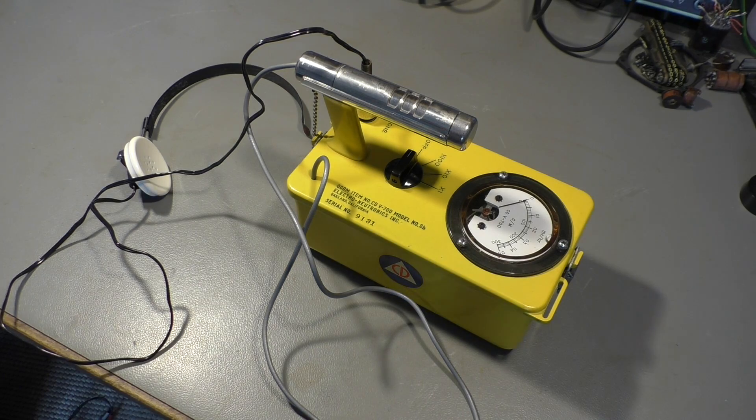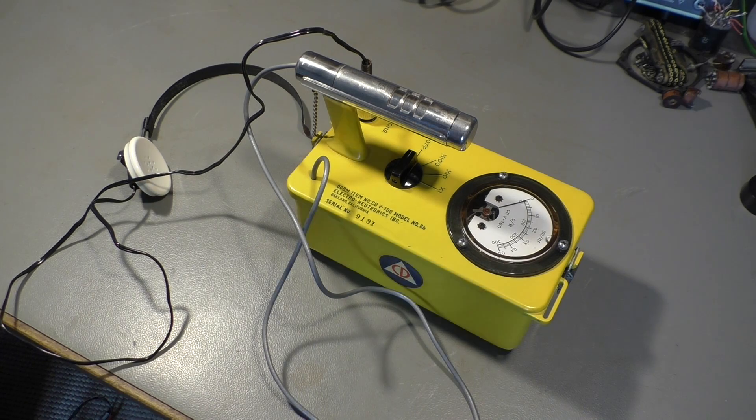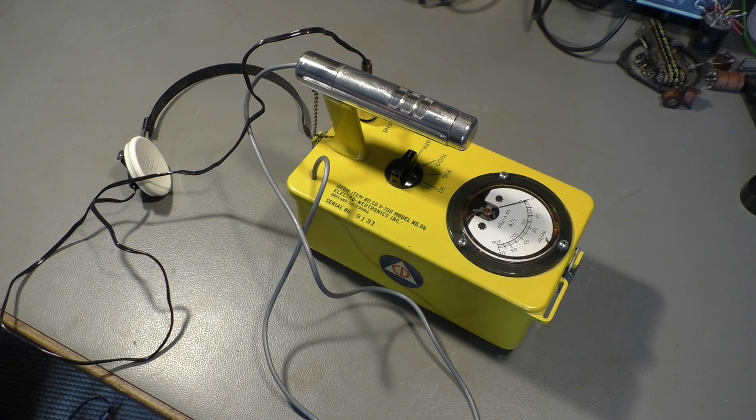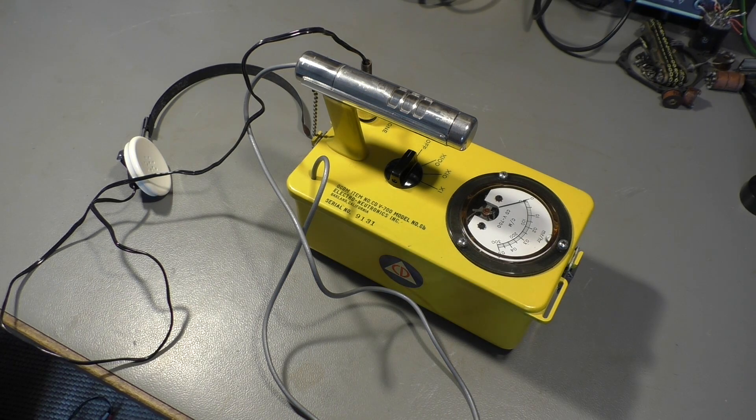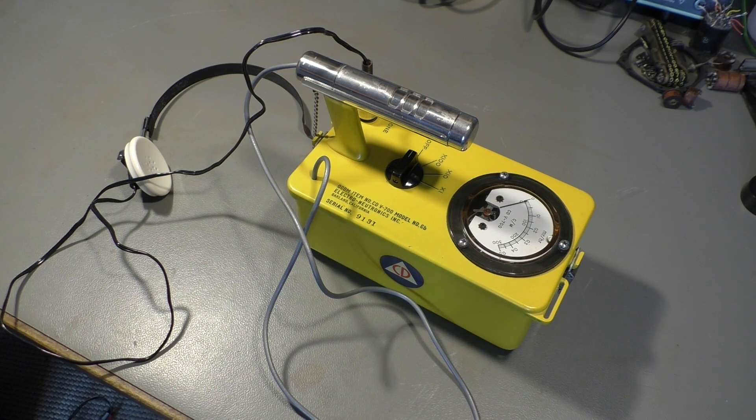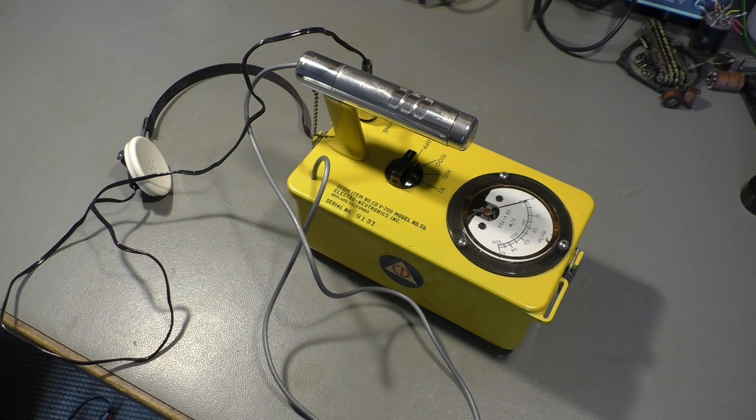This is a relic from the Cold War, a CD-V700 Geiger counter. It has been made from about 1950 to end of 1960, and it has been produced in large quantities.